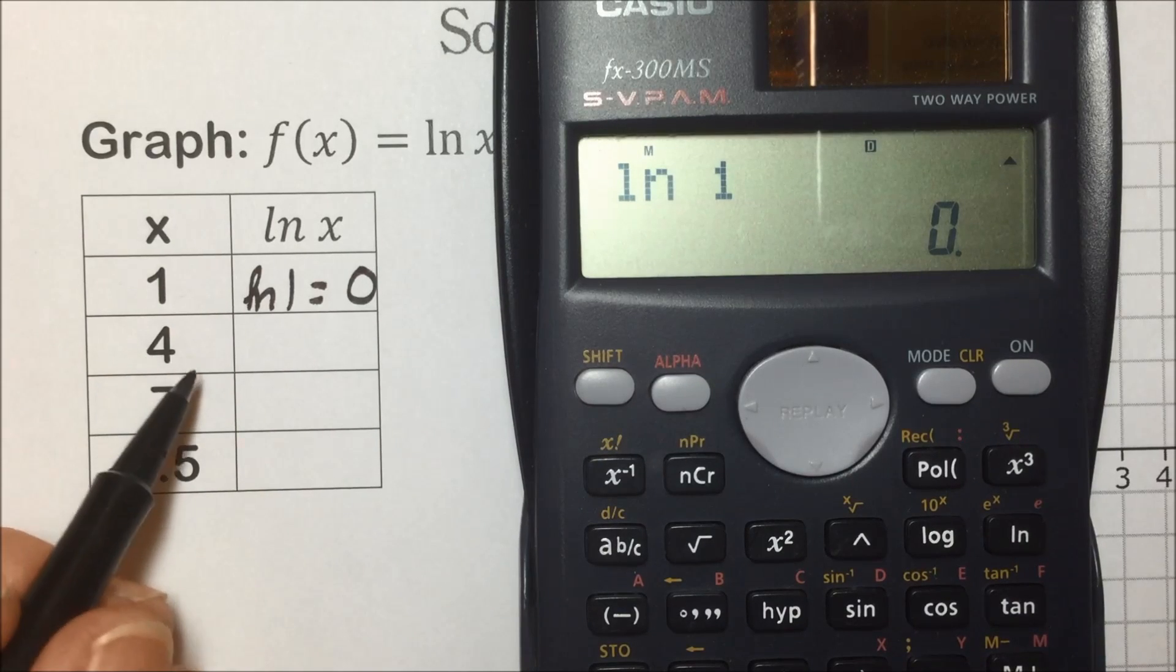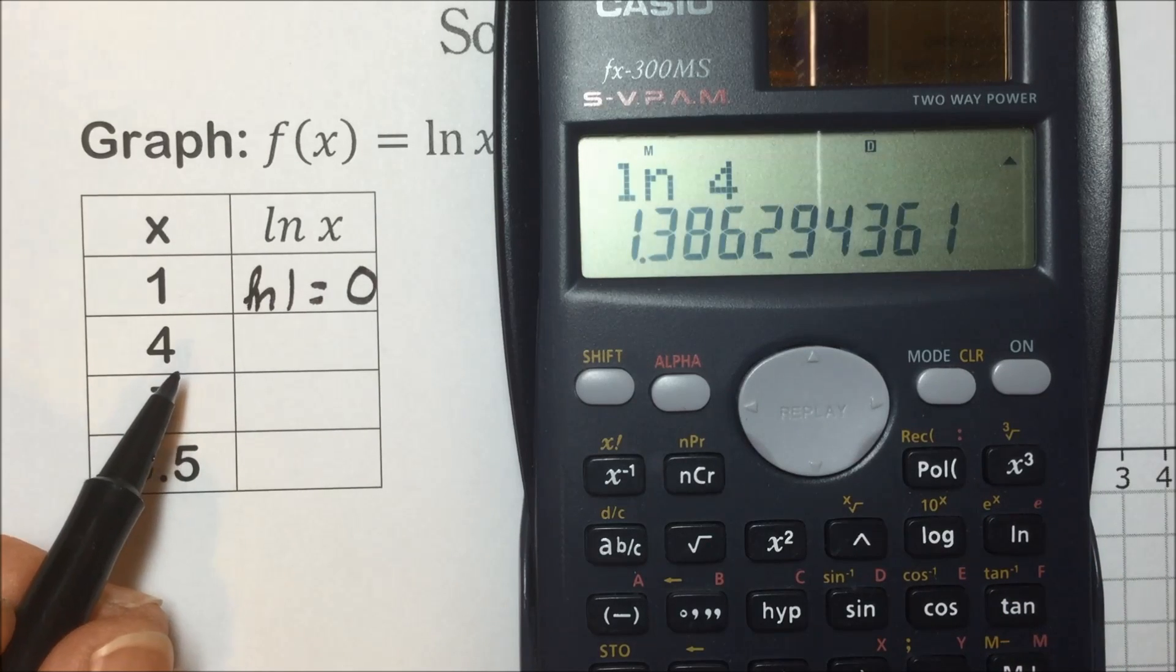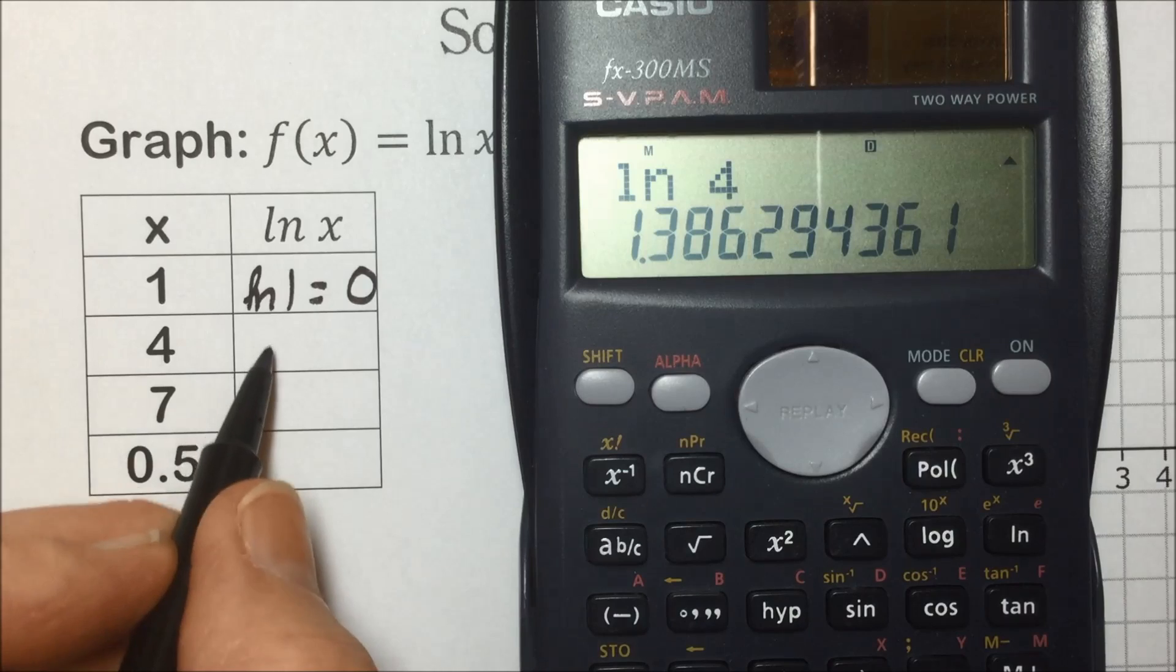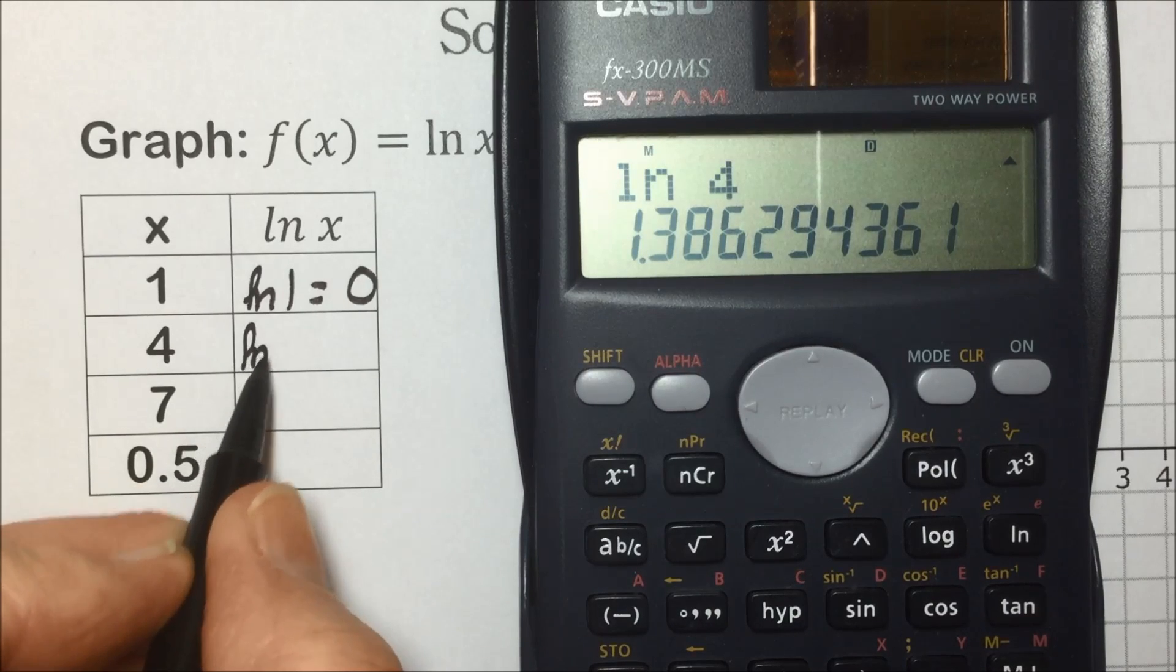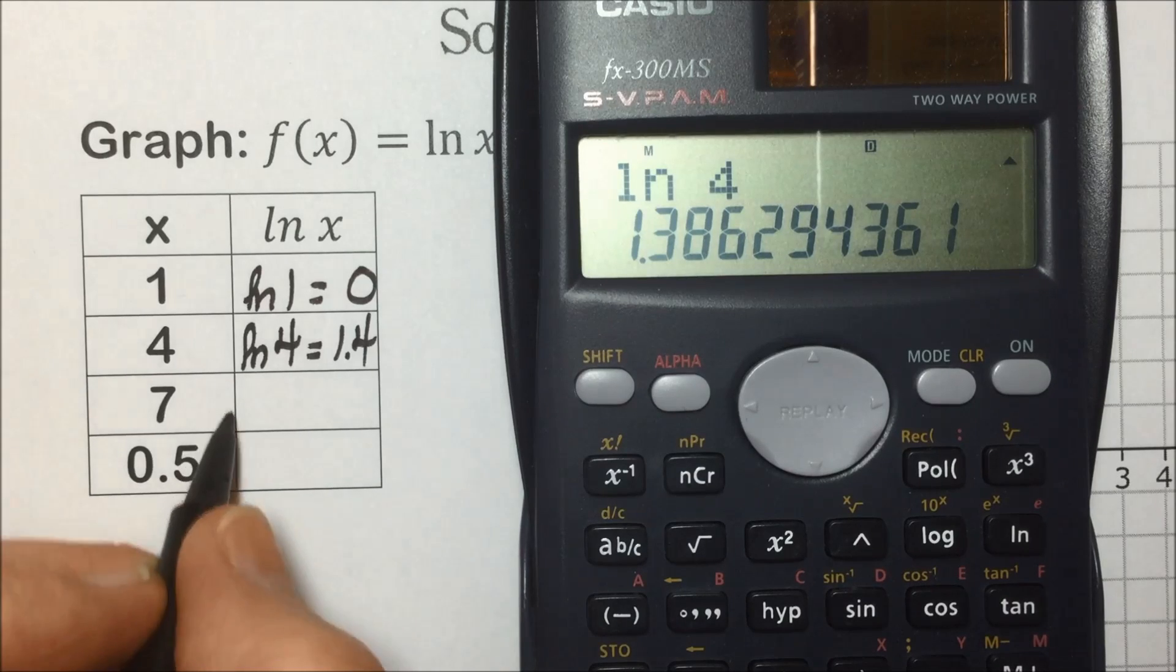Base e to what power gives us 1 would be 0. If we put 4 in there, what's the natural log of 4? When we hit equals, we end up with ln of 4 has a value of 1.4 if we round it to the nearest tenth.